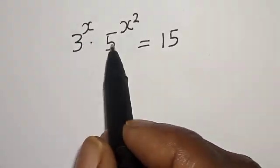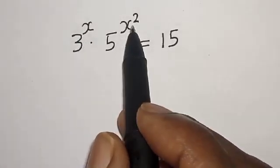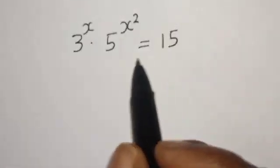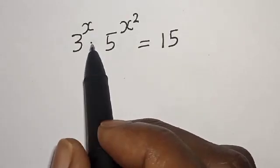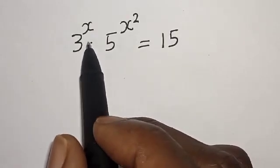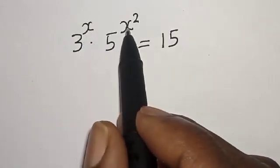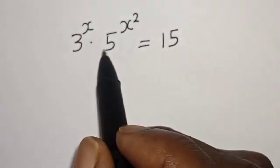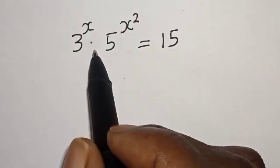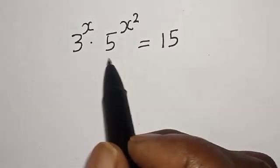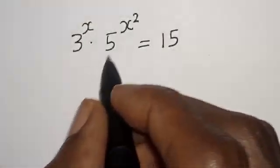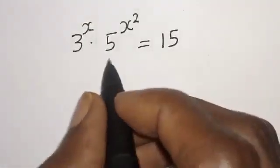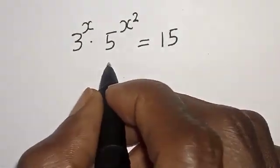3 raised to power s multiplied by 5 raised to power s squared is equal to 15. Hi everyone, welcome to my class. In this class we want to find the value of s from this given equation. Before we proceed, please don't forget to like, share, comment and subscribe.